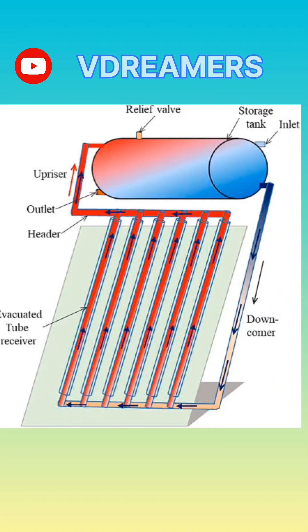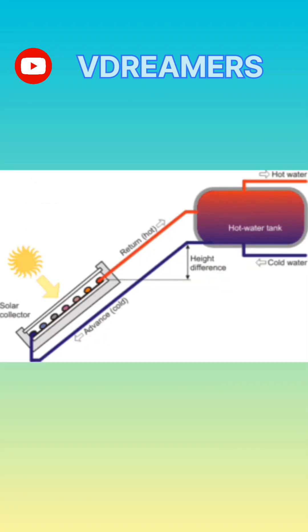What is a solar water heater? A solar water heater uses sunlight to heat water for domestic or commercial use. It's an eco-friendly and cost-effective way to get hot water without relying on electricity or fossil fuels.